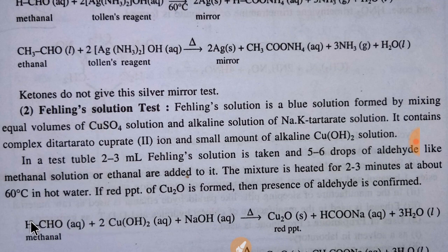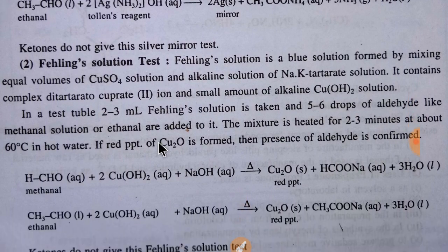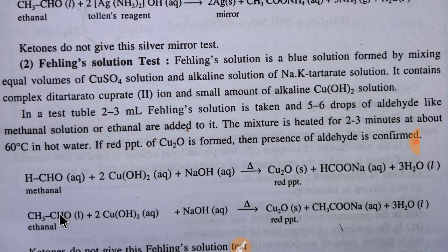In a test tube, if you add an aldehyde like methanal, or five to six drops of ethanal, and then add two to three ml of Fehling's solution, you will see a red precipitate of copper oxide. This red precipitate is the proof of the presence of aldehyde. Here are two examples: methanal and ethanal.